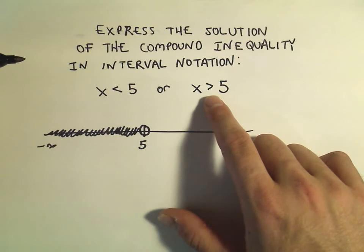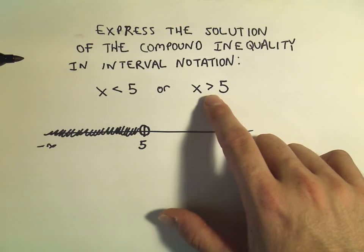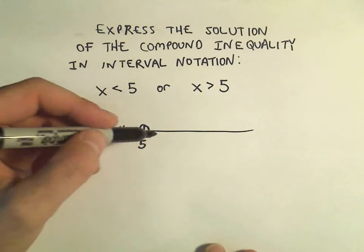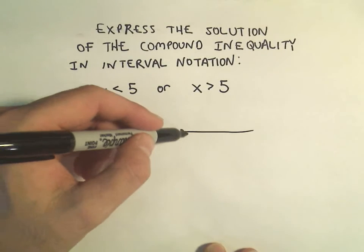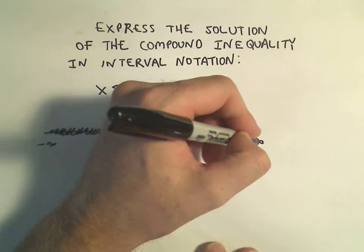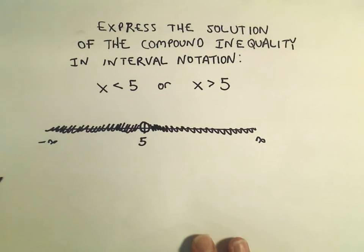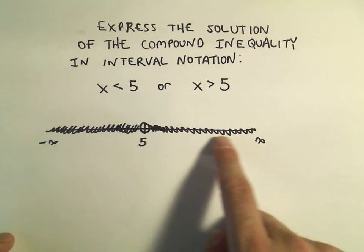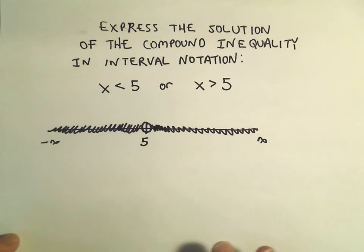The other inequality says x has to be greater than 5, but again, not including 5. So that would give me everything to the right of 5, all the way out to infinity. If I want to describe everything I've shaded using interval notation,